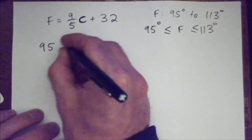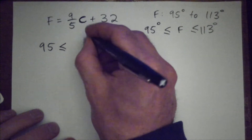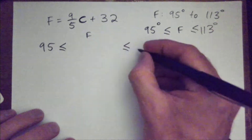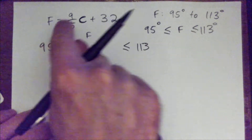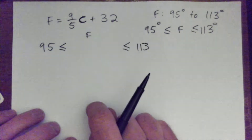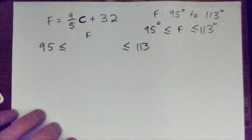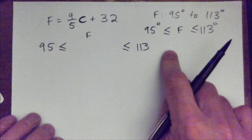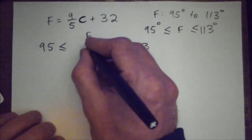So: 95 less than or equal to F, which is less than or equal to 113. And we have that Fahrenheit equals 9 over 5 times Celsius plus 32. So just for the purpose of practicing our algebra skills, we're going to stick that formula in here in place of F.